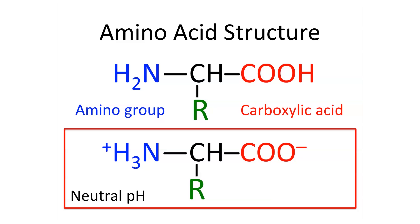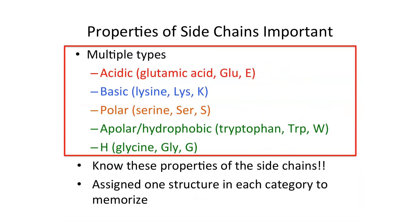At neutral pH, the amino group is positively charged and the carboxyl group is negatively charged, so the overall charge is neutral but you have a distinct polarity. At low pH, the amino group stays protonated and the carboxyl group becomes protonated. At high pH, the carboxyl group stays charged and the amino group deprotonates. There are equations by which you can determine exactly what form the amino and carboxyl groups are in at different pHs.